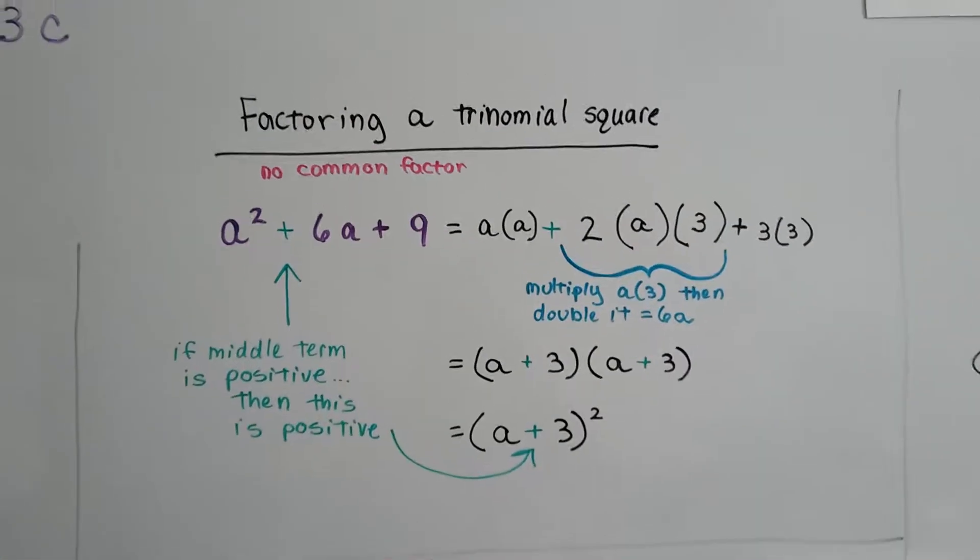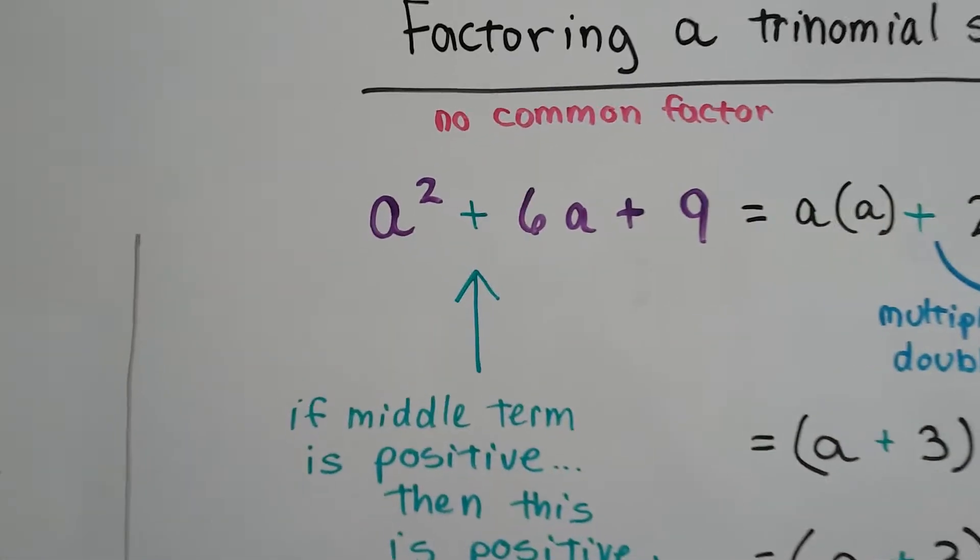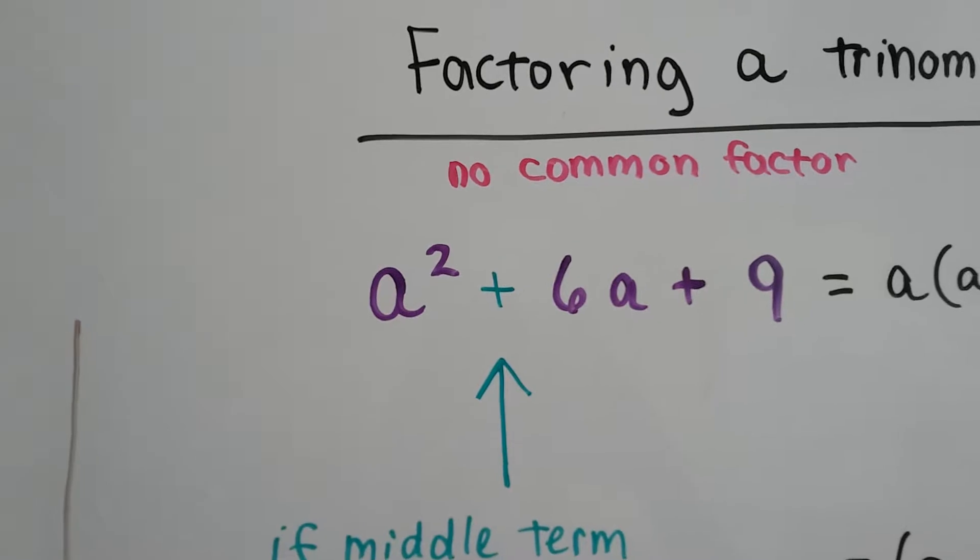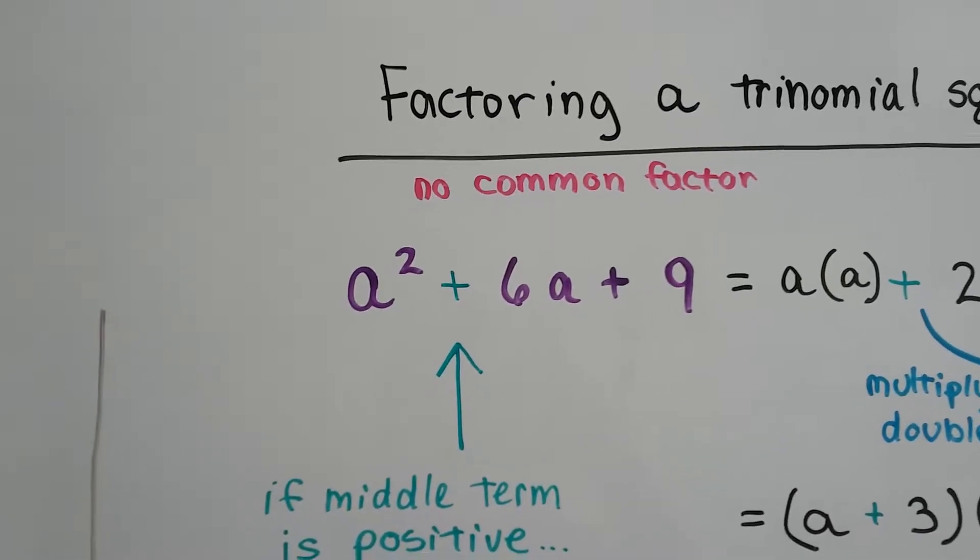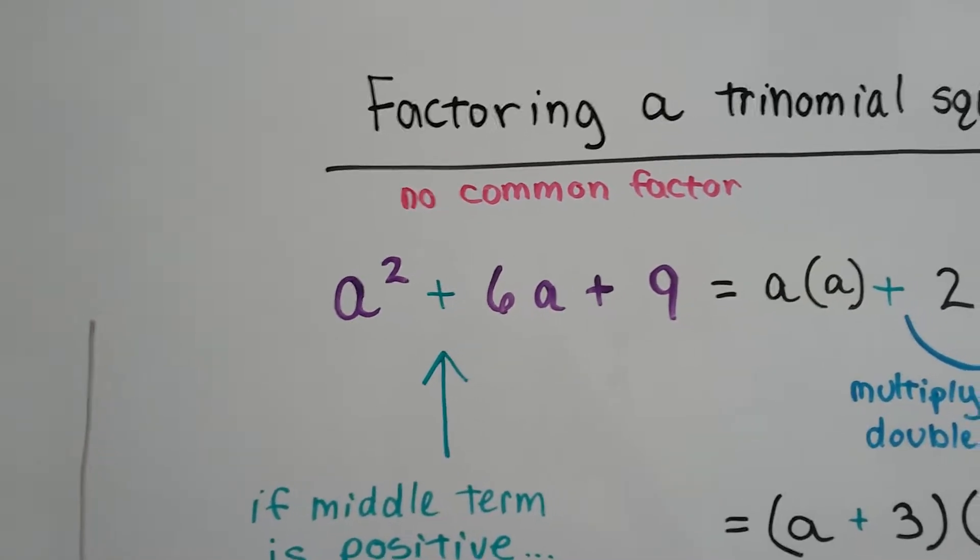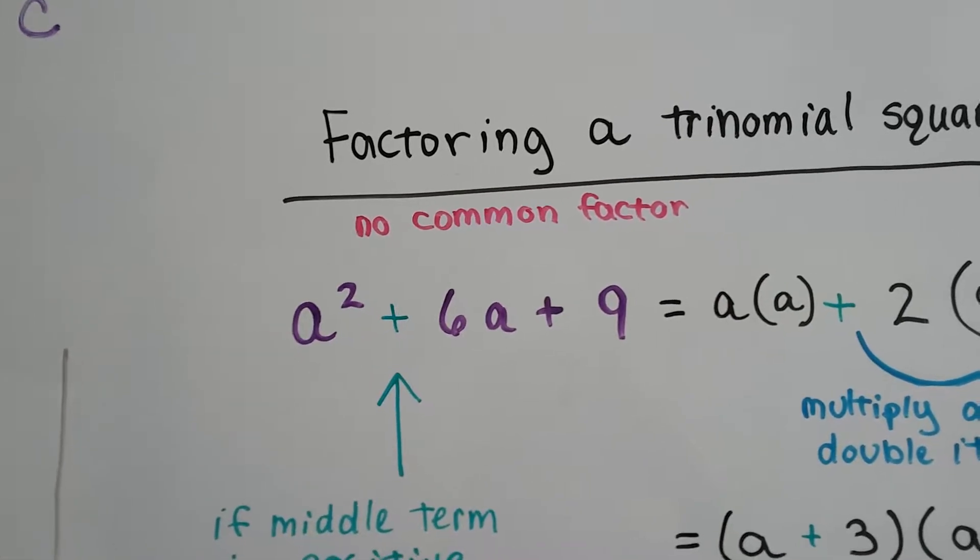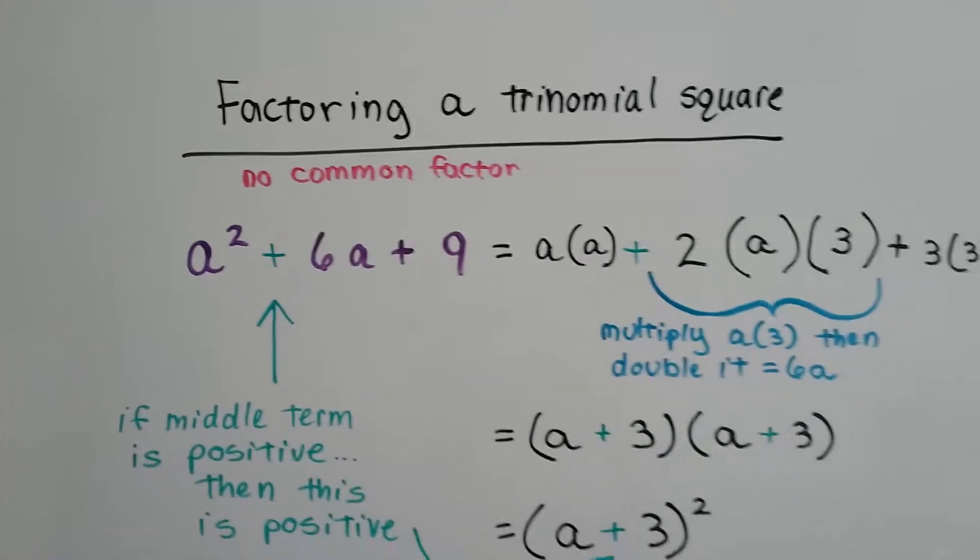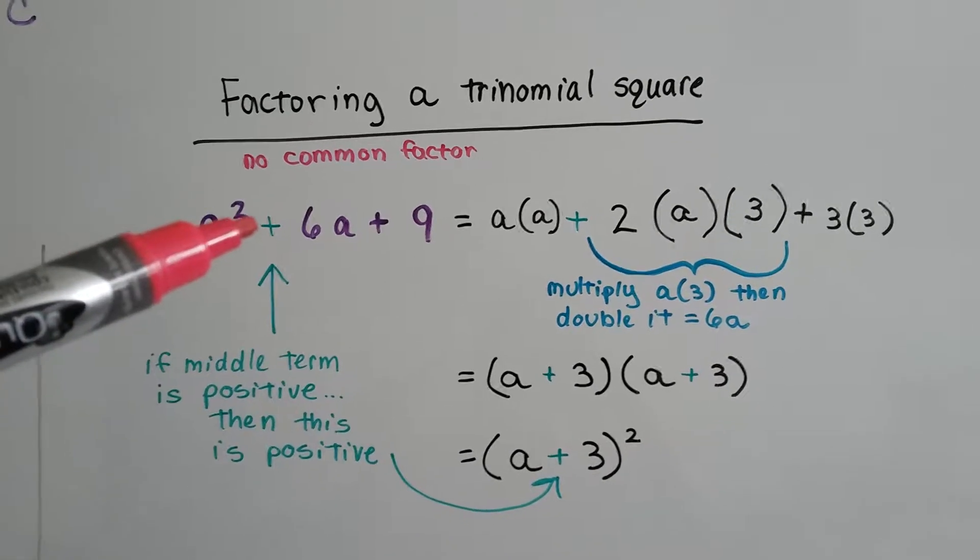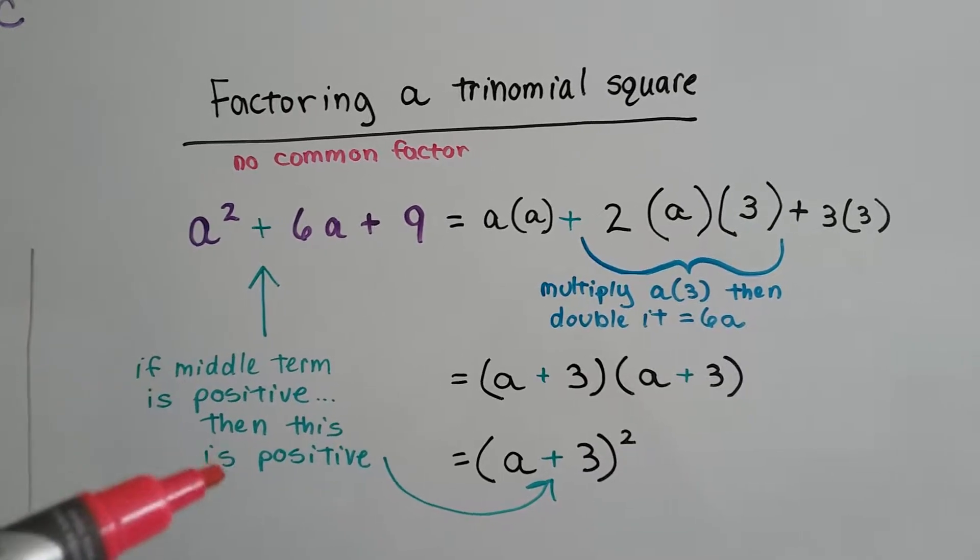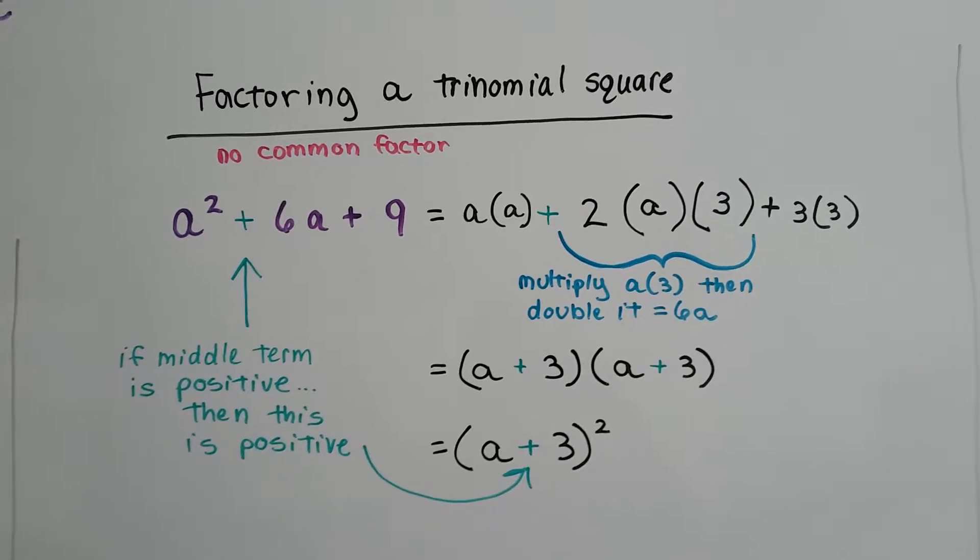So let's try doing this. Let's factor a trinomial square. Take a look at a² + 6a + 9. We can see there's no common factor between them. 6 factors out to 2 and 3, and 9 factors out to 3 and 3. But there's no 3 in this a², so there's no common factor. So we just get going on the factoring. And remember, if there's a positive sign for the middle term, then there's going to be a positive sign when we're done for our binomial square.